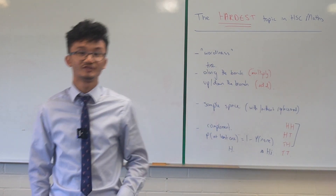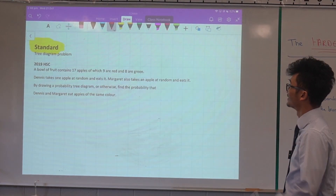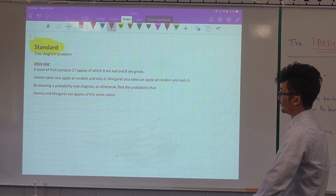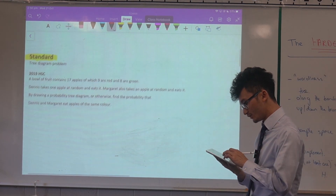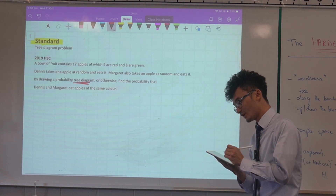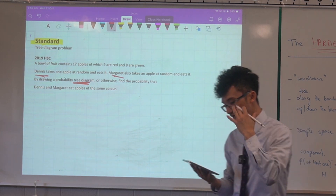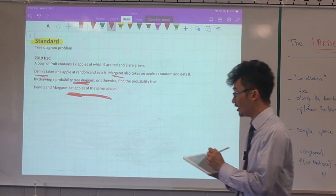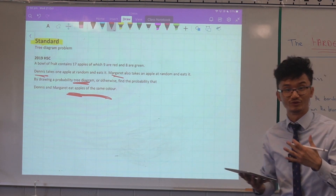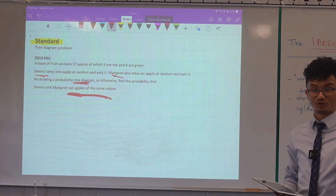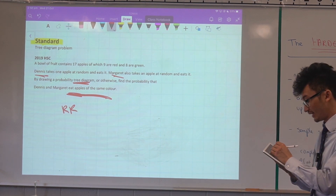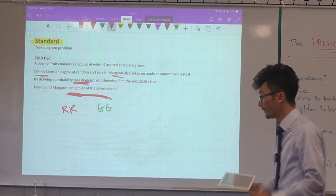Let's get into some specifics — starting with Mathematics Standard. I've given myself two minutes per course. Here's a tree diagram problem: Dennis and Margaret each take an apple from a fruit bowl and eat it. We're trying to find the probability they eat apples of the same color. Before drawing the tree, think about what 'same color' means — students often get red-red but neglect green-green.